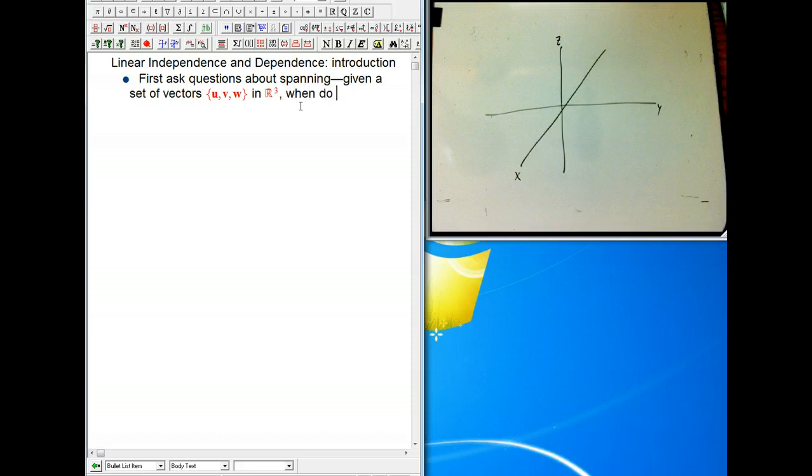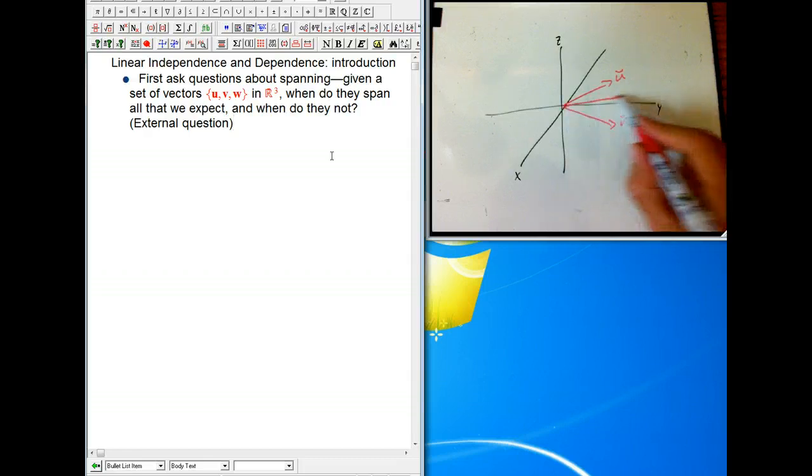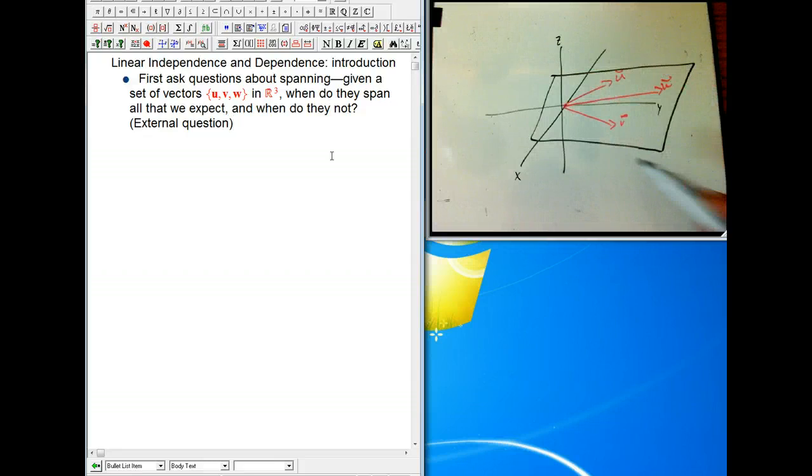When do they span all that we expect, and when do they not? And so that's a question, this is an external question. We've got this fixed set of vectors u, v, w, and let's say maybe they look like this, maybe here's u, and here's v, and here's w, and hopefully it looks like I'm trying to suggest that these guys are coplanar.